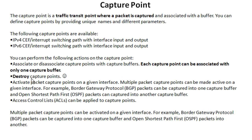You can also destroy capture points — that's directly from Cisco's documentation, and I just think it's funny they use the word 'destroy' rather than 'delete.' You can have multiple capture points — one set up to capture BGP, one for OSPF — spitting out to different capture buffers. You can also use access control lists to set up multiple capture points on the same interface, for instance one capturing only BGP packets to one buffer and another capturing only OSPF to another buffer, or even the same buffer.